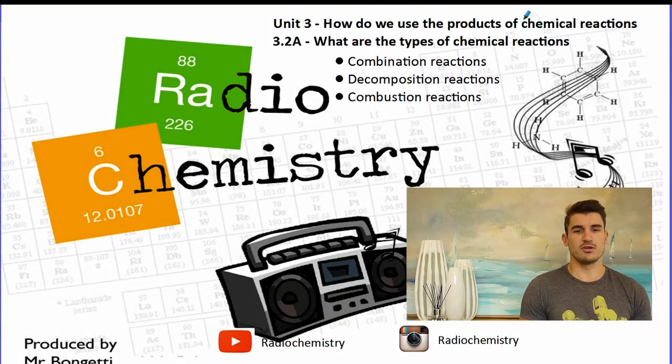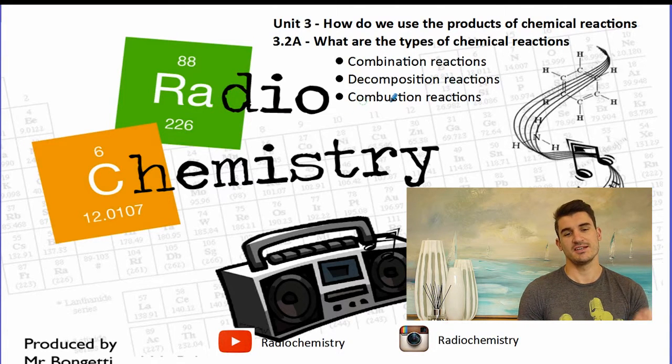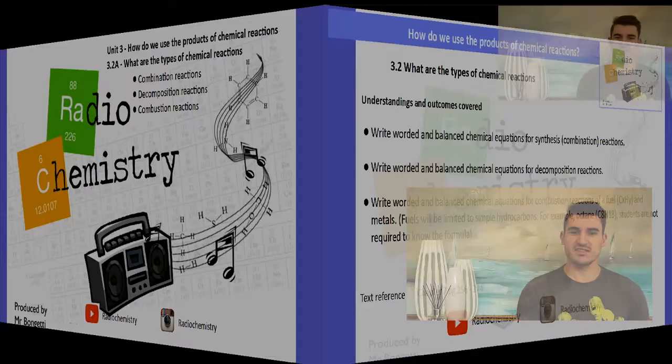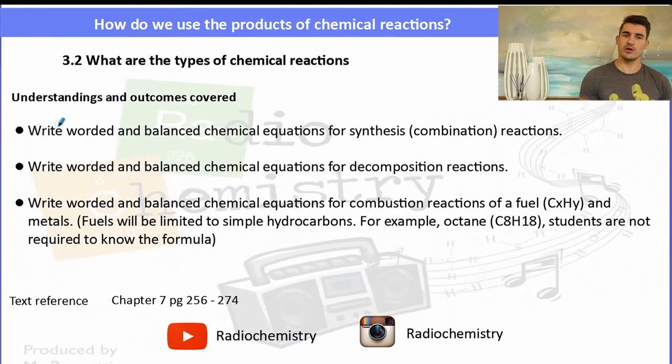What are the types of chemical reactions? We look at combination reactions, decompositions and combustion reactions in this video. Understandings and outcomes: we need to be able to write worded and balanced chemical equations for combination, decomposition and combustion reactions. For the combustion reactions, you'll be given the information about the fuel so you won't have to remember them.